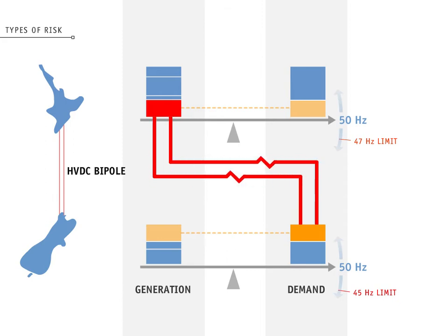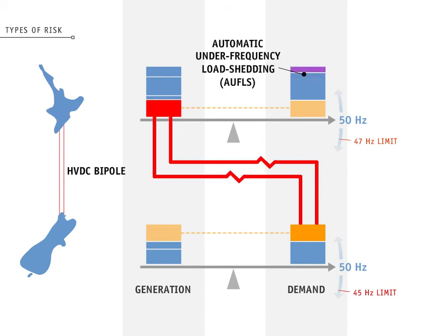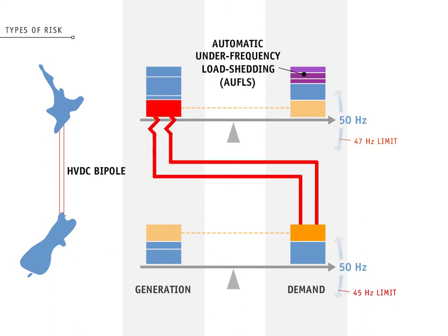DC-ECEs are also called bipole trips. When they happen, our reserve management tool has already calculated the FUR and SIR needed to prevent cascade failure. The reserve calculation for an extended contingent event, or ECE, includes automatic under-frequency load shedding, or AWFLS. This automated shedding of system load is an addition to the interruptible loads.